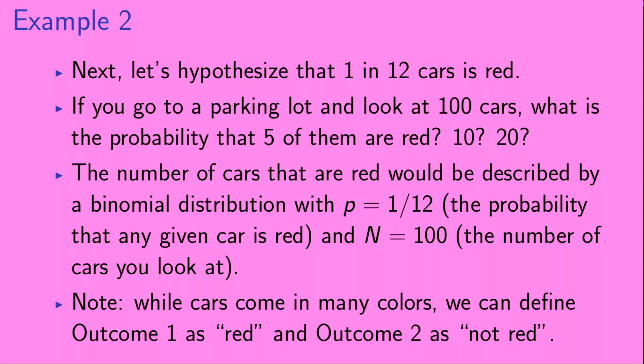Example 2. Let's hypothesize that 1 in 12 cars is red. If you go to a parking lot and look at 100 cars, what is the probability that 5 of them are red? Or that 10 of them are red? Or that 20 of them are red? The number of cars that are red would be described by a binomial distribution with p equals 1 twelfth, the probability that any given car is red, and n equals 100, the number of cars that you look at. Note that while cars come in many colors, we can define outcome 1 as red and outcome 2 as not red.